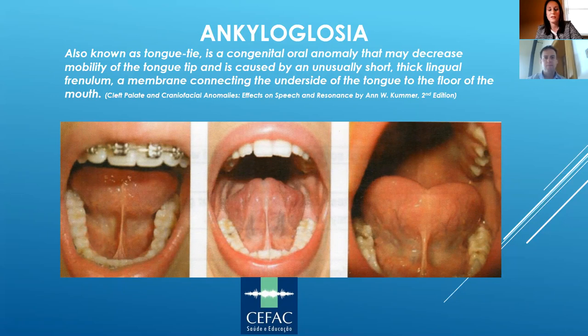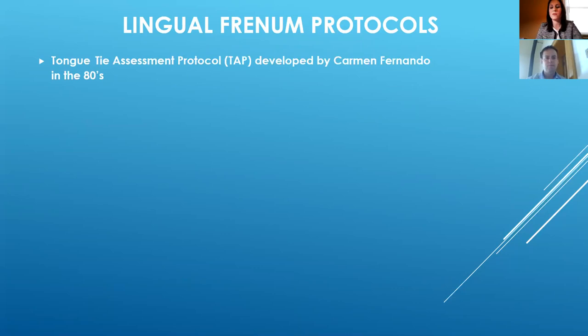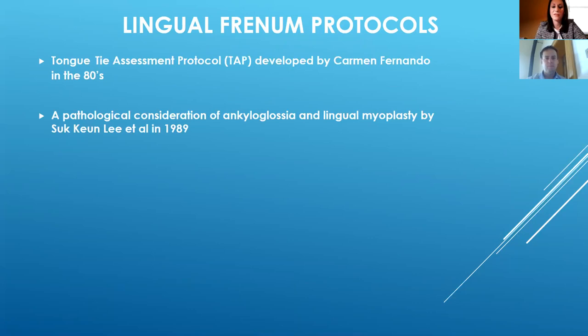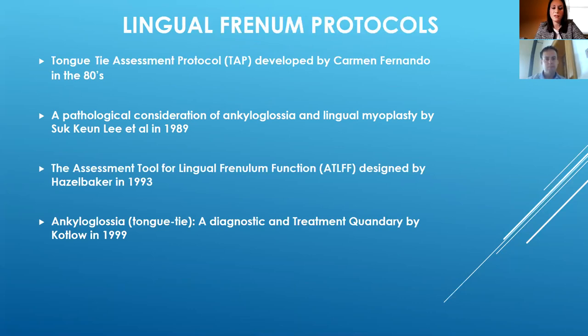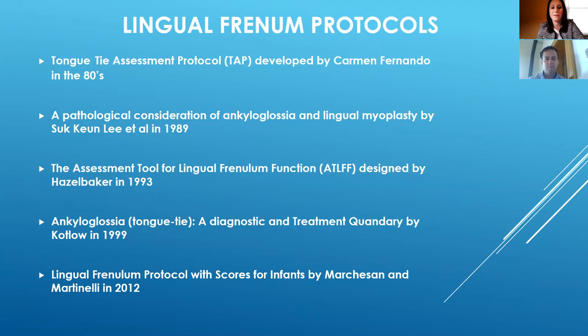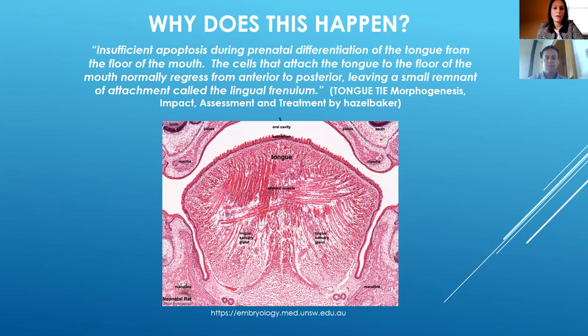There are different types and grades of restriction. Over the years, various assessment protocols have been developed: the tongue tie assessment protocol by Carmen Fernando in the 1980s; a pathological consideration of ankyloglossia by Sukhum Lee in 1989; the assessment tool for lingual frenulum function by Hazel Baker in 1993; a diagnostic and treatment quandary by Kantlow in 1999; and the lingual frenulum protocol with scores for infants and adults by Marcison and Martinelli in 2012.